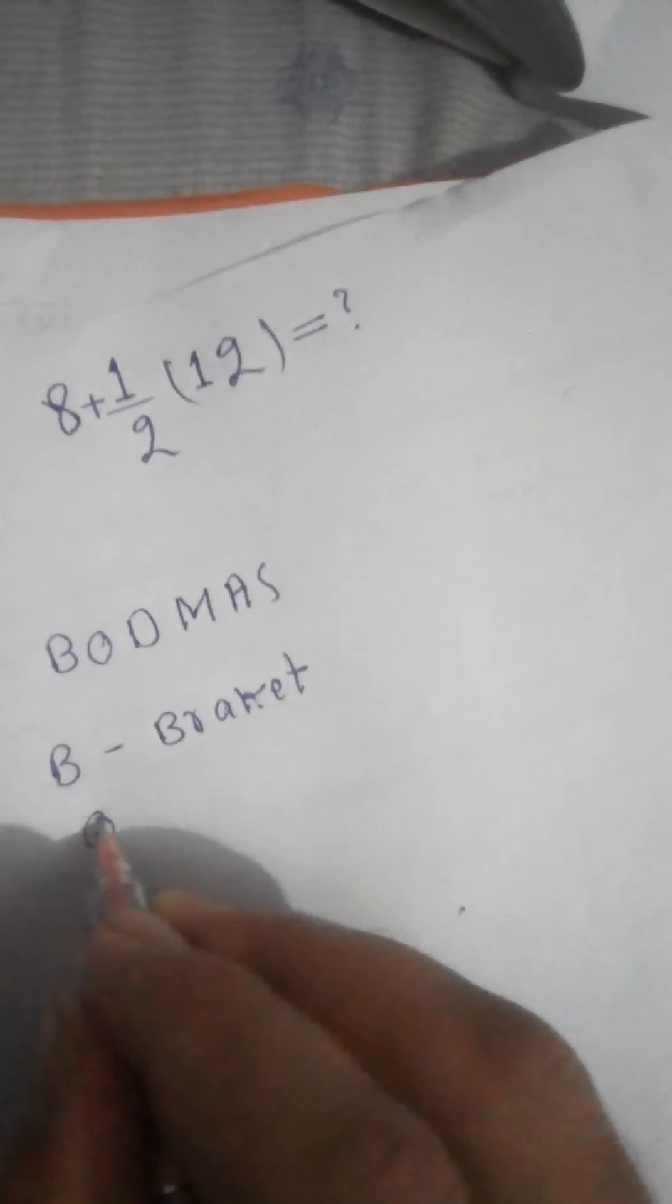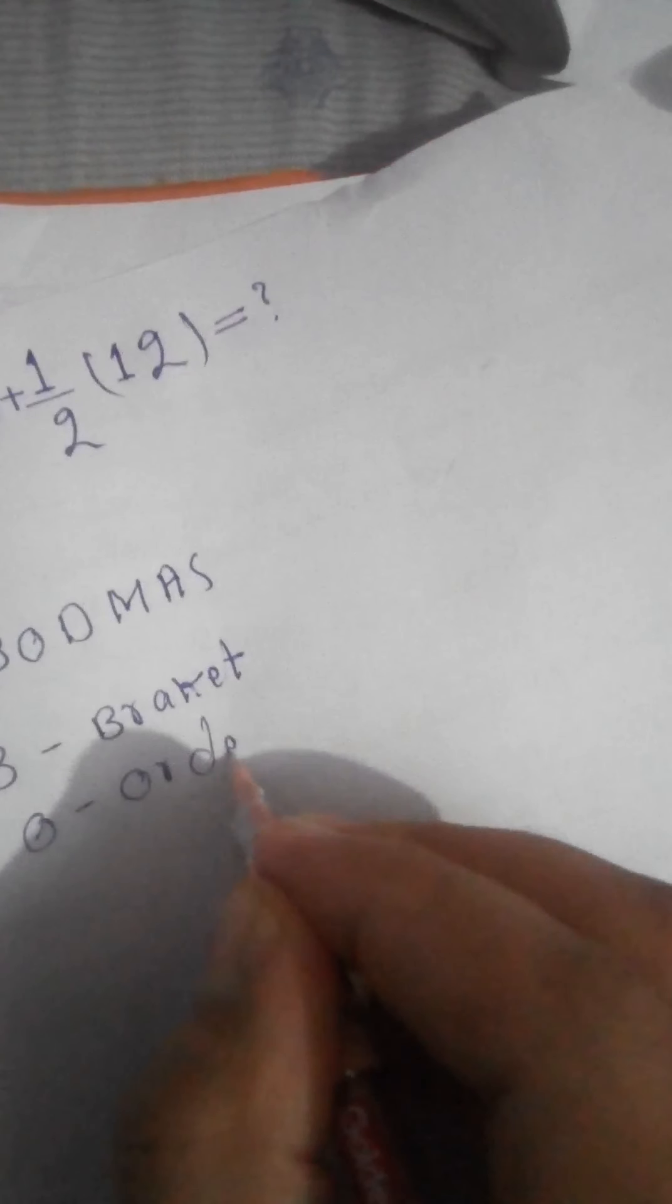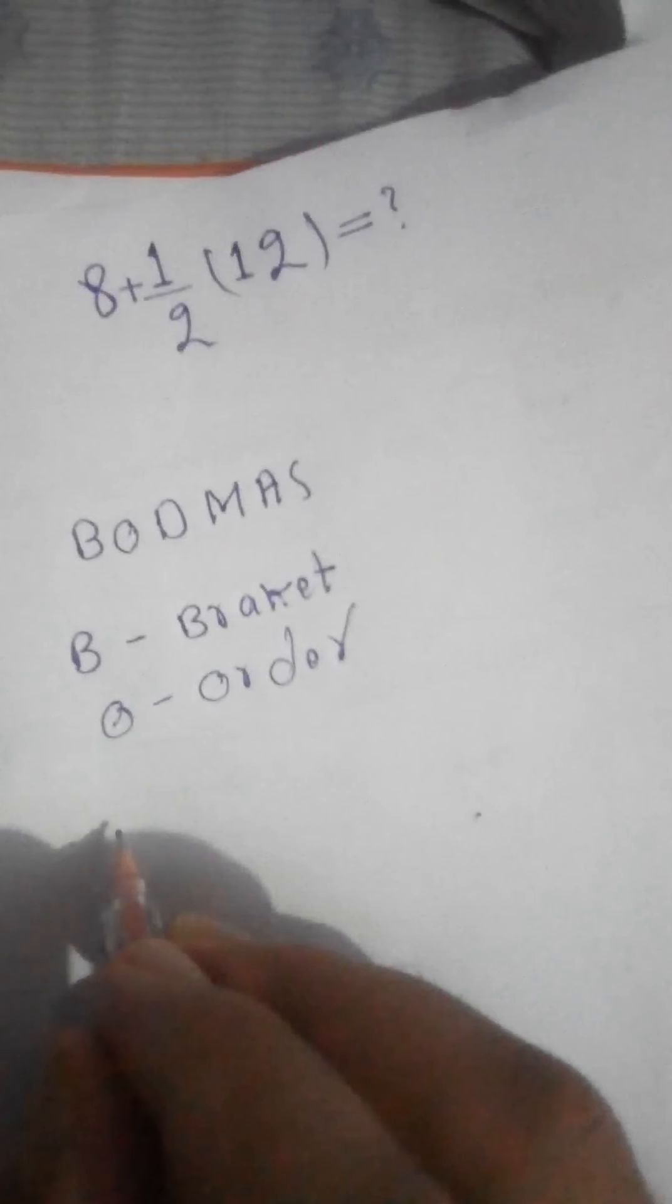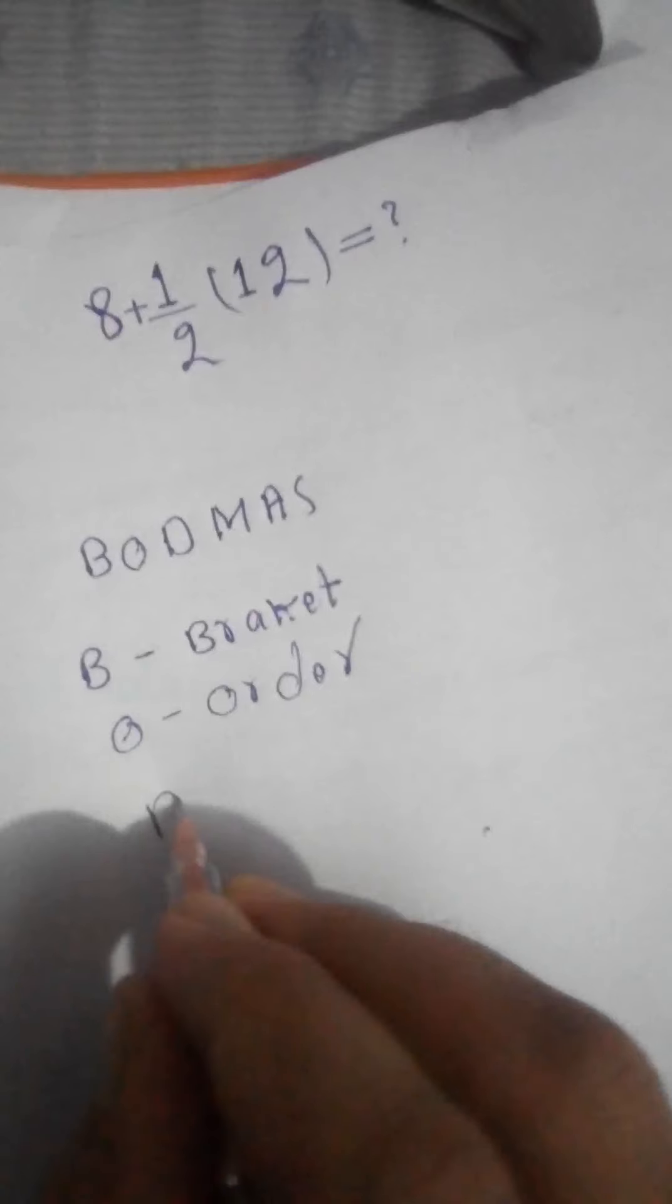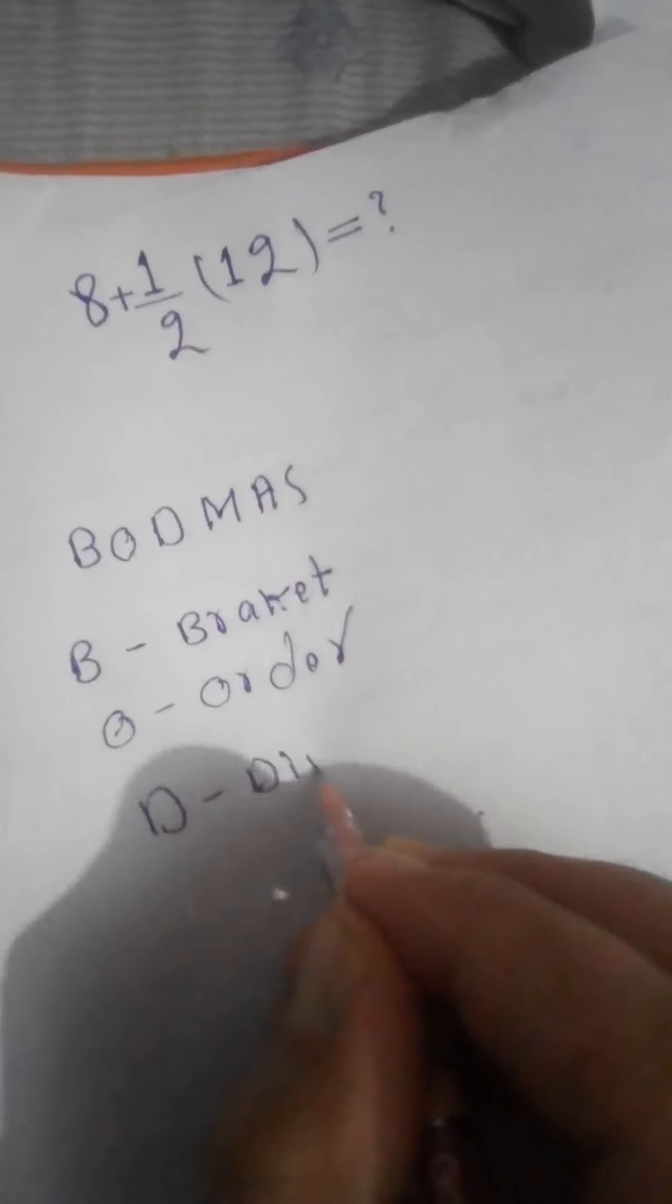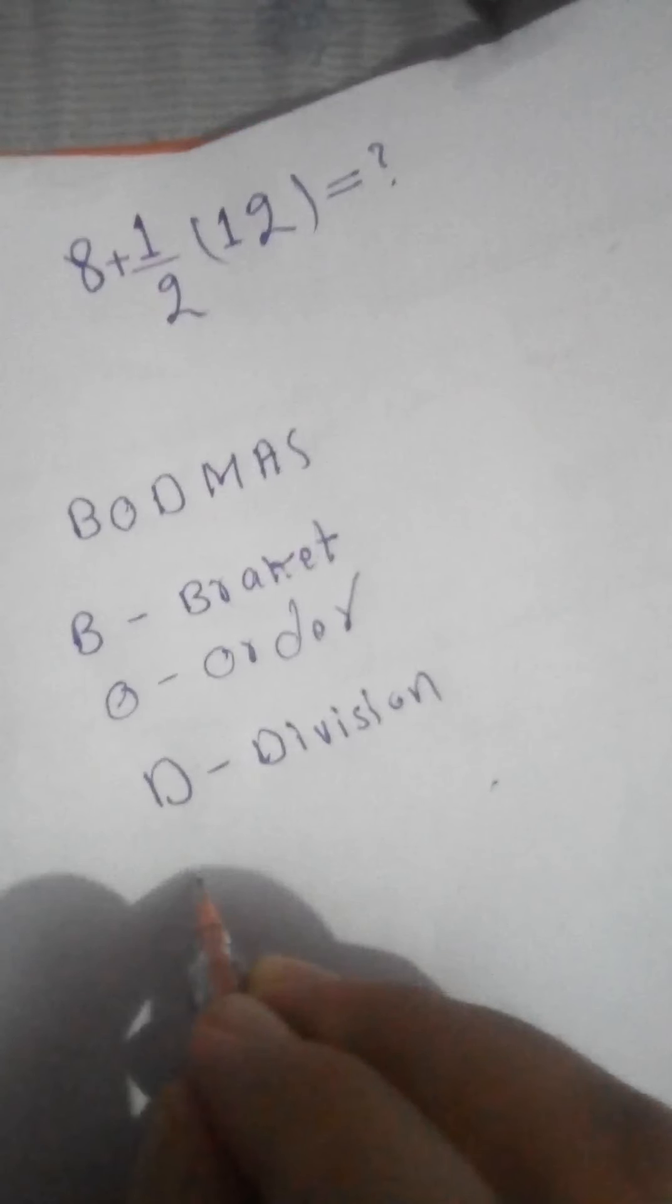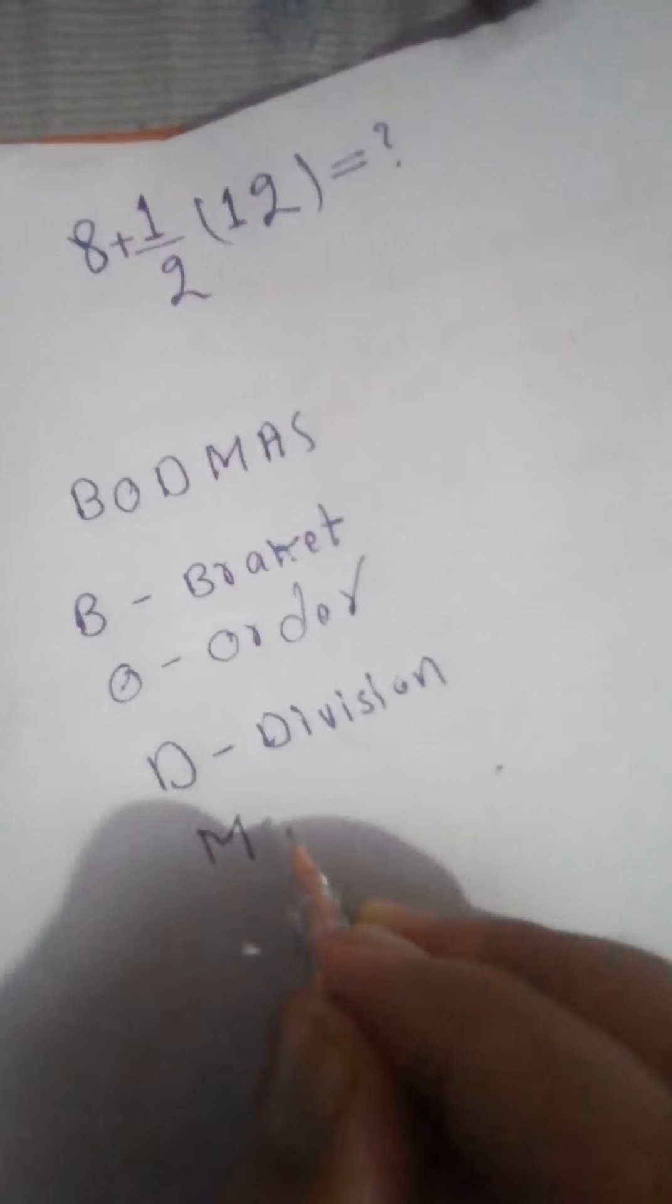O means order, D means division, M means multiplication.